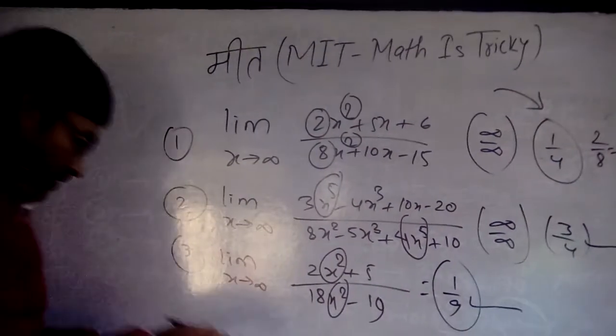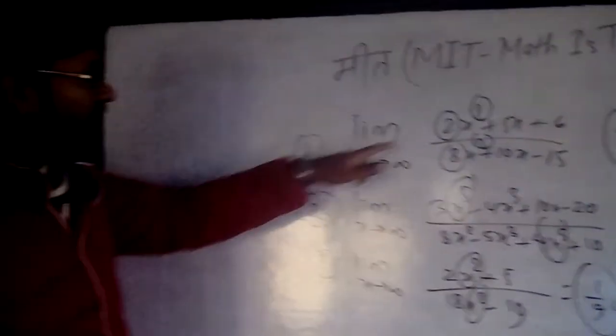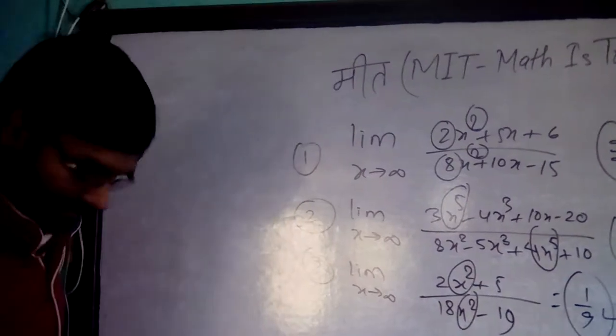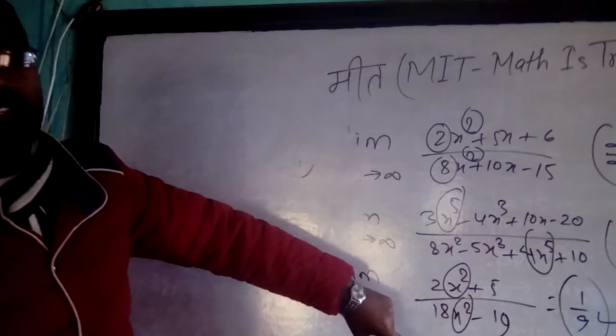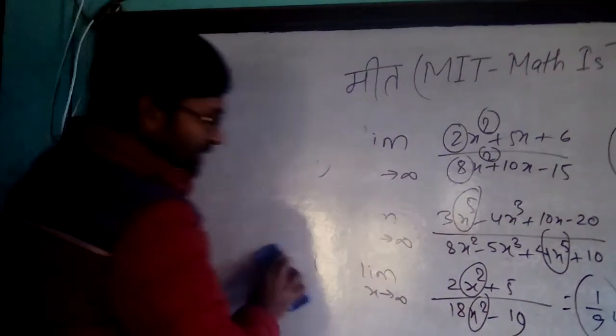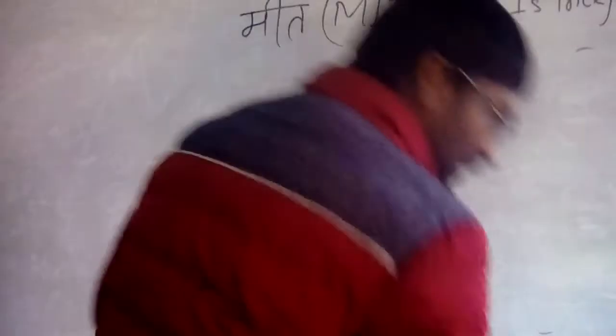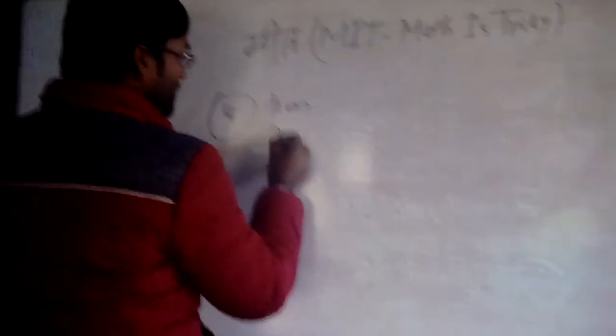Hope you like this video. What will happen if degree of numerator is different from denominator? This is only valid when degree of numerator and denominator is equal. But this may not be the case in some problems. If you write here, let me say number 4, if you want to solve this problem: x tends to infinity, (2x + 5)/(5x² + 3).